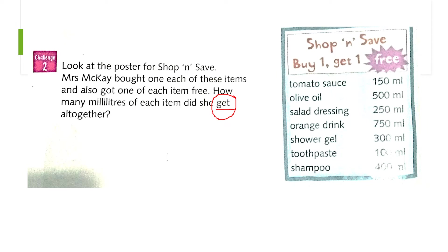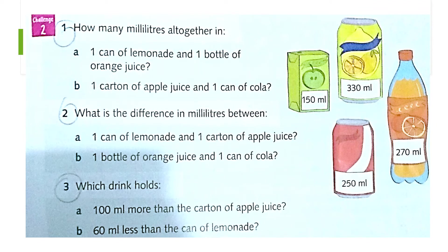Question 1a: how many milliliters all together in one can of lemonade and one bottle of orange juice? Lemonade is 330 milliliters and orange juice is 270 milliliters. 'All together' means you have to add — so add 330 mL plus 270 mL. Don't forget your unit when you add.